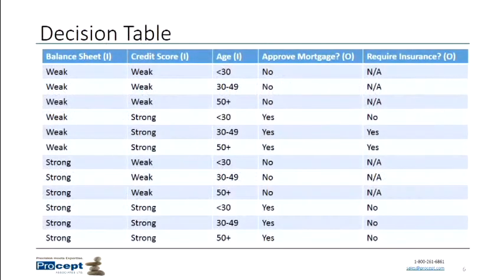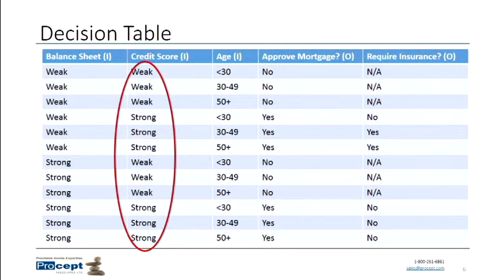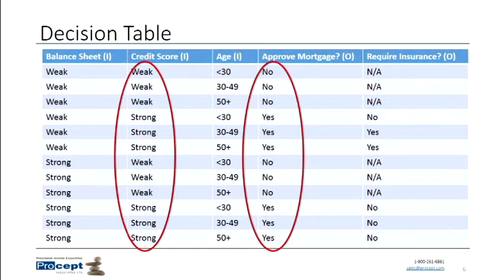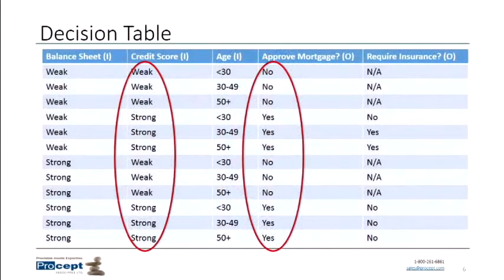Let's take a look at the credit score input column and the mortgage application output column. If you look carefully, you'll see they are equivalent. Every time the credit score is weak, the mortgage is not approved. Every time the credit score is strong, the mortgage is approved. What that indicates is that the balance sheet and the age are not truly inputs to mortgage approval — mortgage approval is directly and only related to the credit score. Your stakeholders might say they need all three inputs, but after filling in the table, it turns out the credit score is the only thing needed to determine mortgage approval. The other inputs affect the insurance column, but not mortgage approval.